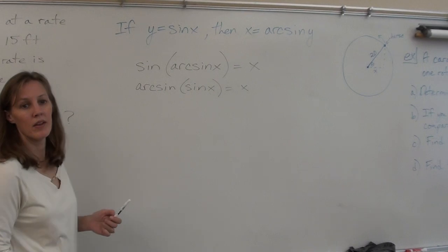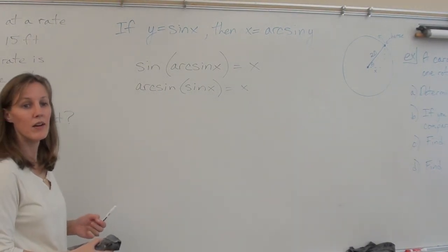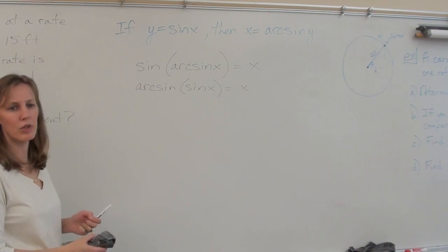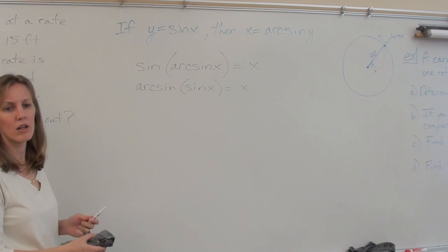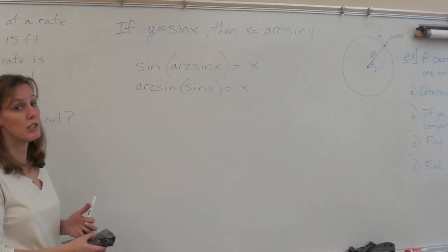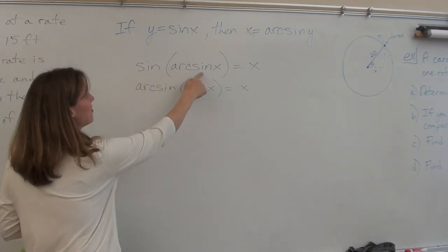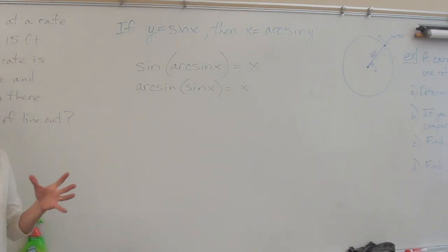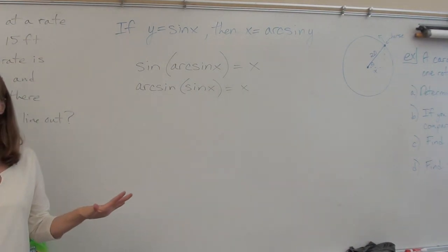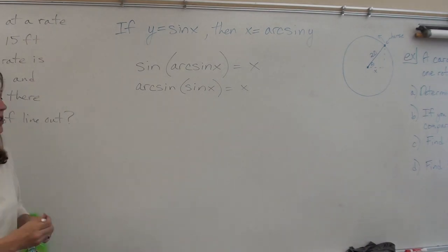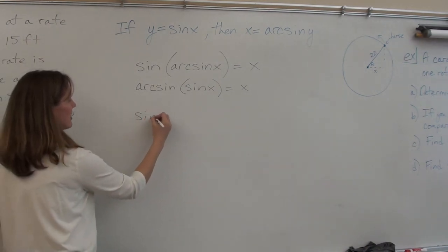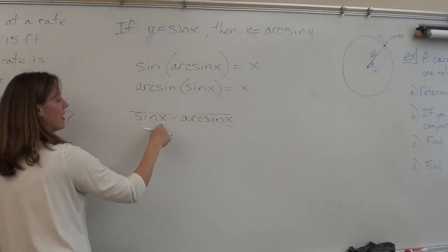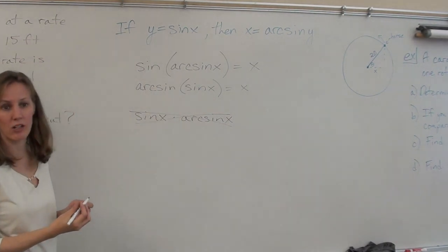So why wouldn't arc sine be equivalent to cosecant? Because cosecant is a reciprocal, not an inverse. These aren't multiplying — sine of arc sine of x is not sine times arc sine of x. Don't confuse input with multiplication. It's the sine function with arc sine of x as the input, which is completely different.